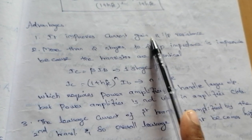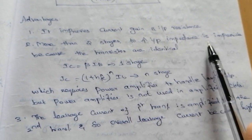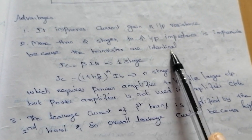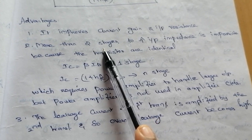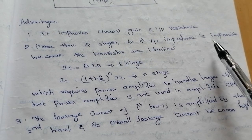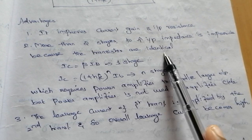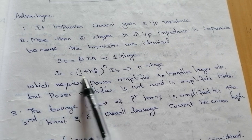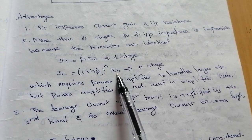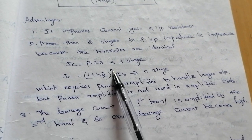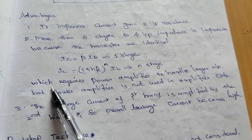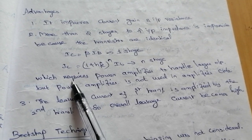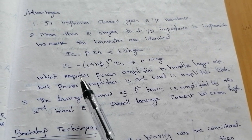The Darlington amplifier improves current gain and input resistance. Using more than two stages to improve the input impedance is not possible because the transistors are identical: IC equals beta·IB for one stage, but for n stages IC equals (1 plus HFE)^n times IB. So it is not possible to get higher input impedance beyond two stages. Two common collector amplifiers connected together is sufficient for increasing the input impedance.